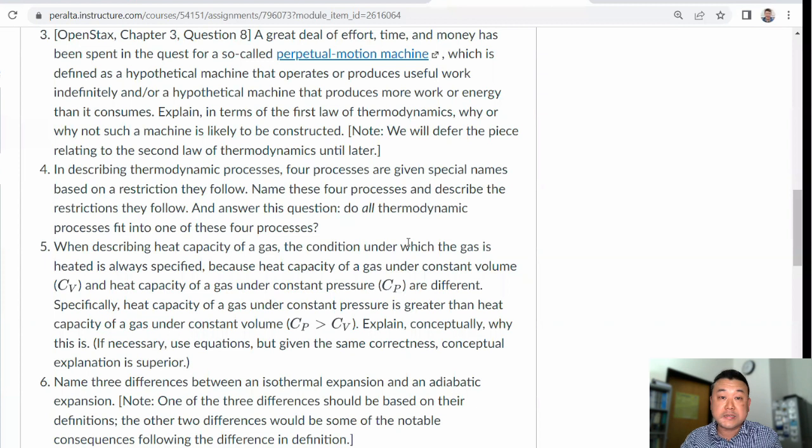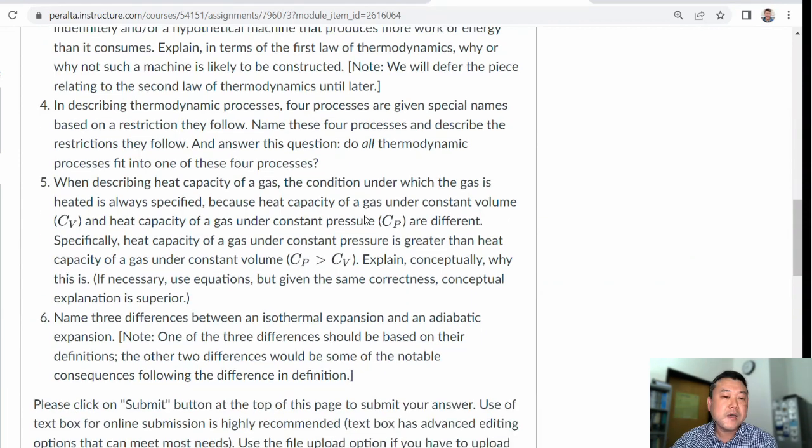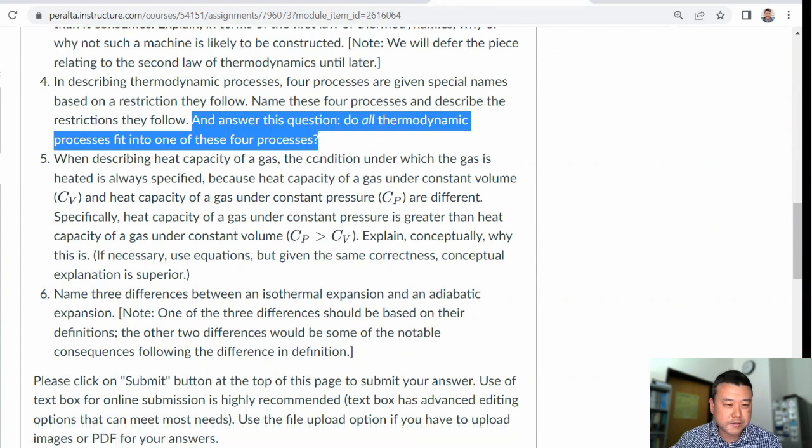Iso means it's the same. So, isothermal keeps the temperature... Let me not give away the whole answer, you look it up. These four named processes put some kind of restriction on some of the thermodynamic quantities. That's how they are useful. Let me leave that for you to answer.